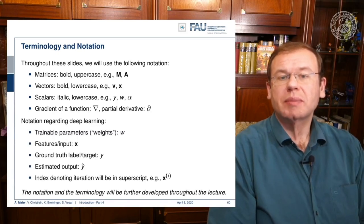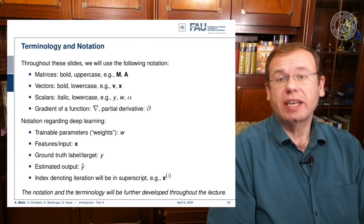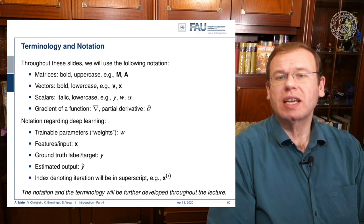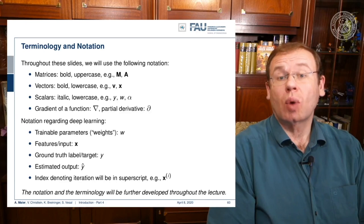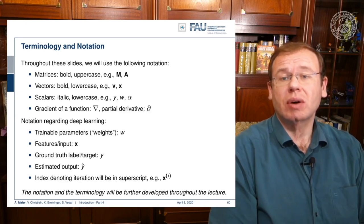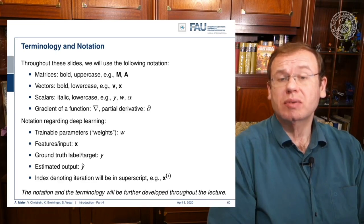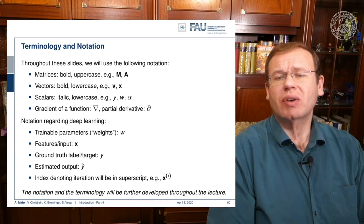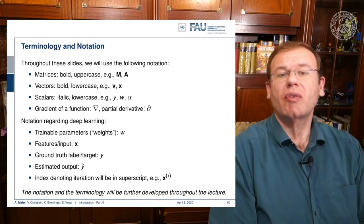Furthermore, we have some specifics about deep learning. The trainable weights will generally be called W. Features or inputs are X, and these are typically vectors. The ground truth label is Y, and the estimated output is Y-hat. If we have iterations going on, we typically denote that in superscript in brackets — this is an iteration index for variable X. This is a coarse notation and we will develop it further throughout the lecture.